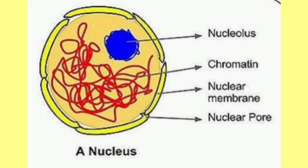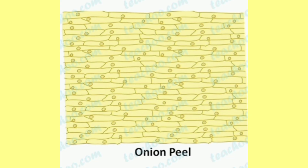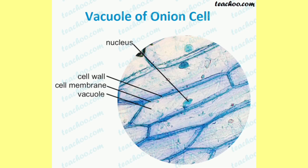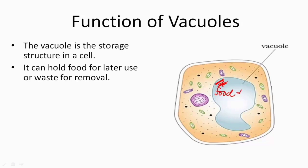While observing onion cells under the microscope, we can notice a blank-looking structure called the vacuole. Larger vacuoles are common in plant cells, while smaller vacuoles are common in animal cells. The functions of vacuoles include storage and disposal of various substances.